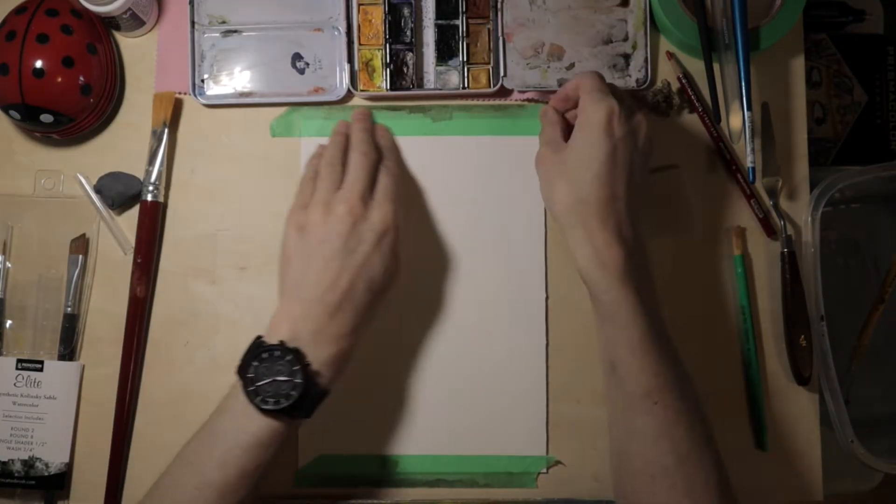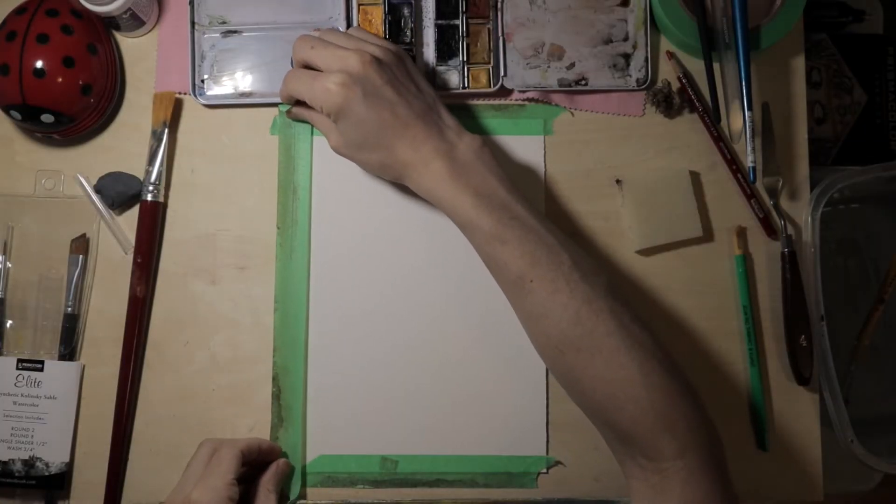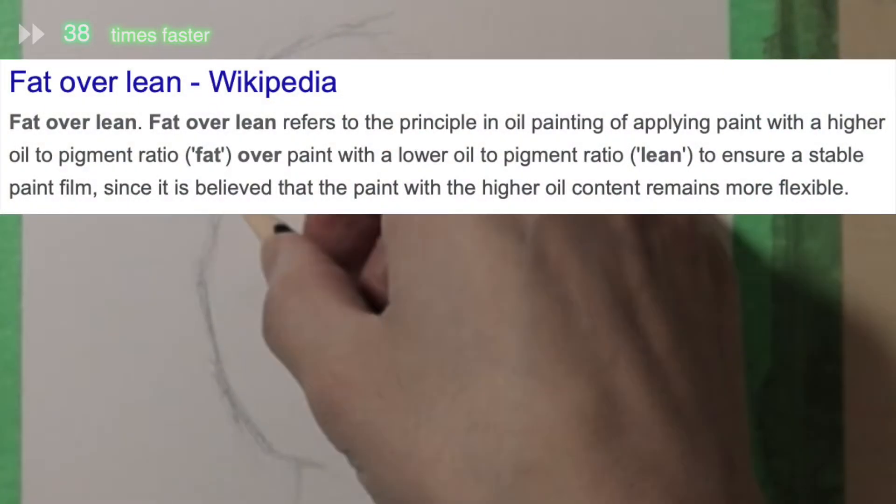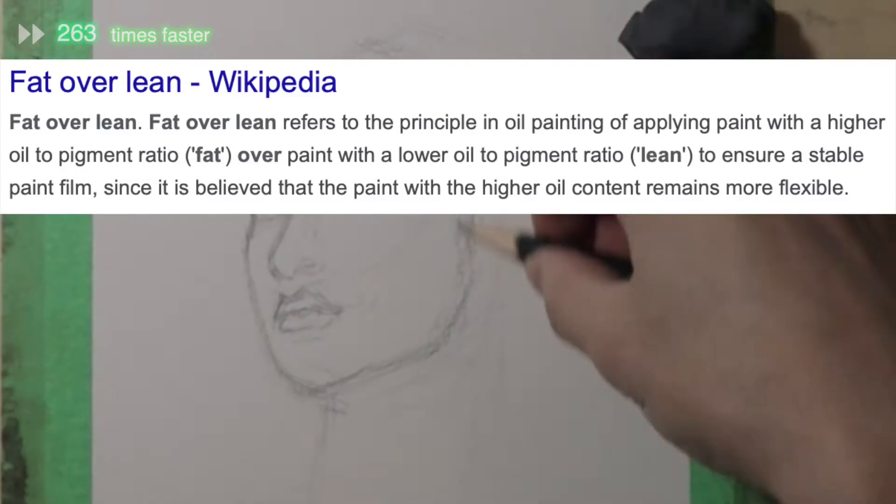OK, let's start this experiment. Watercolor is way more transparent than oil, and with the fat over lean rule of oil painting, I have to paint watercolor first.